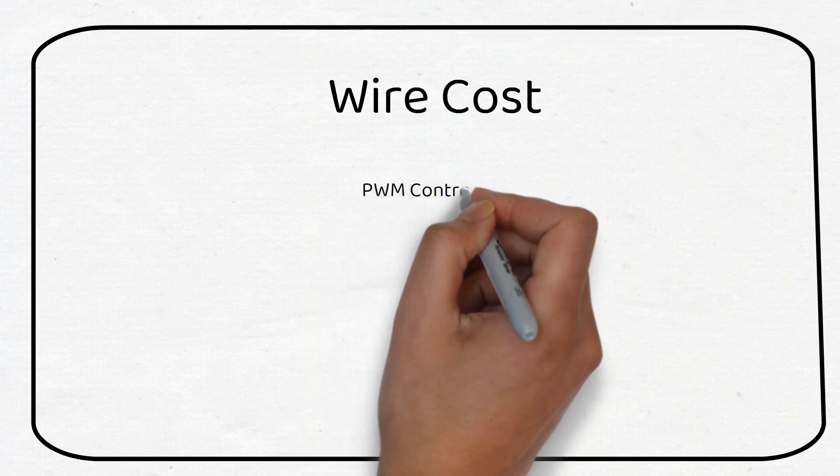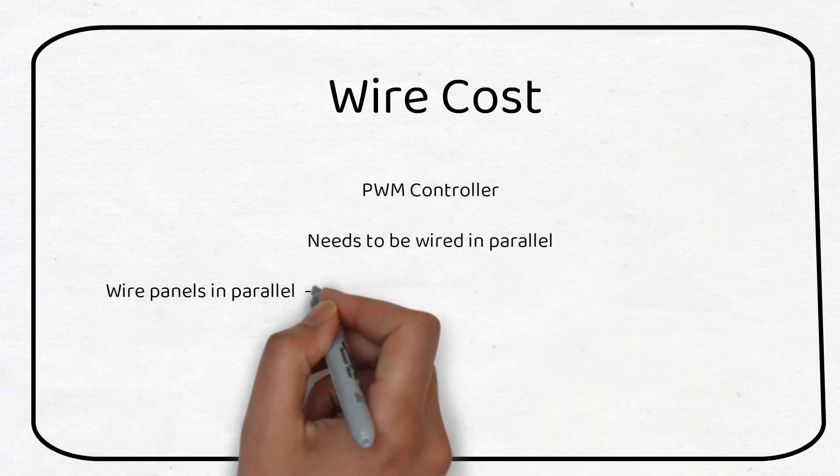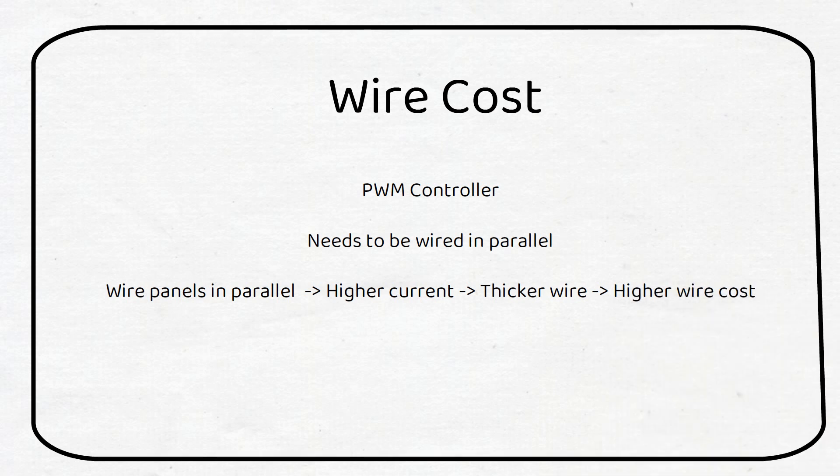Another item to consider with a PWM controller is the cost of the wire. If you use a PWM controller, you need to match the solar panels to the battery voltage. Your solar panels will most likely be wired in parallel. This will increase the current and you will need a thicker wire. It will increase the cost of the installation. Sometimes it's cheaper to get the MPPT and wire the panels in series.